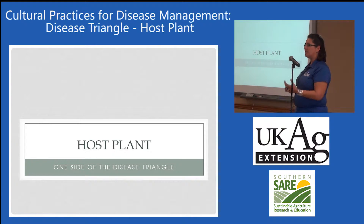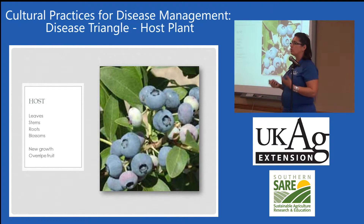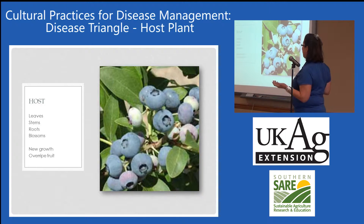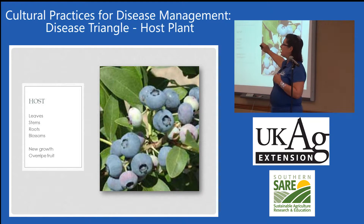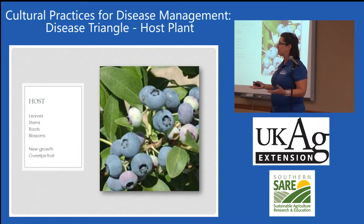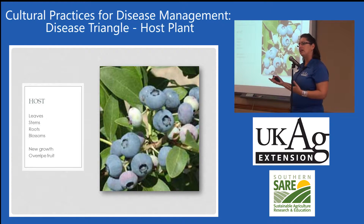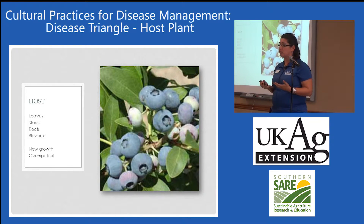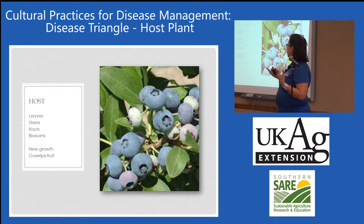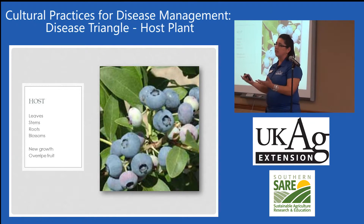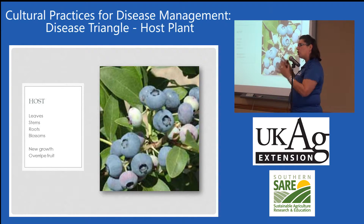How about host plant? We have to have a host plant in order to have disease. If it's a leaf disease, we have to have a leaf; if it's a root disease, we have to have a root. But if it's a pathogen that infects during bloom, that's the critical stage, and later in the season we don't have those risks. Sometimes new growth is the most susceptible; other times it's overripe fruit — anthracnose and some others target overripe fruit. So when I talk about host, we can get more specific than just the plant itself.